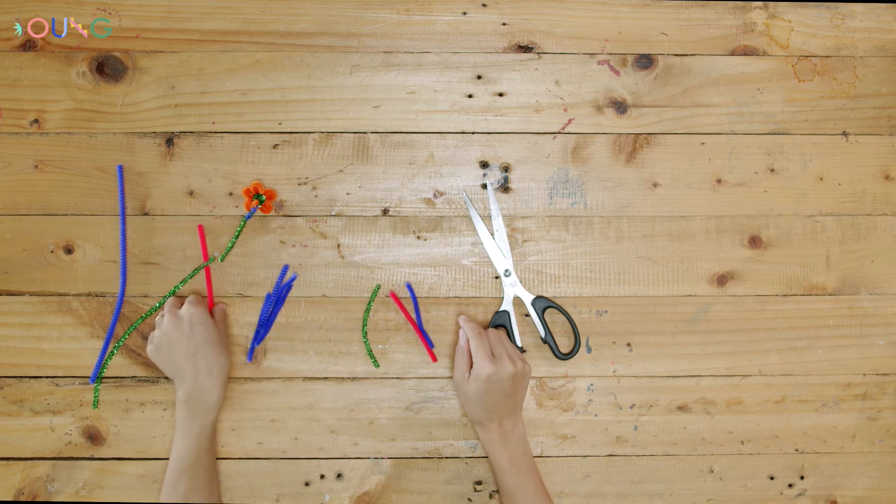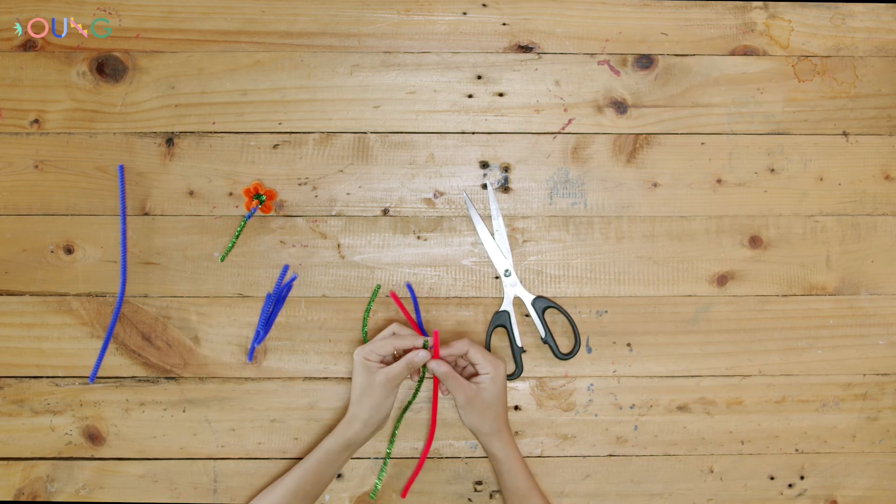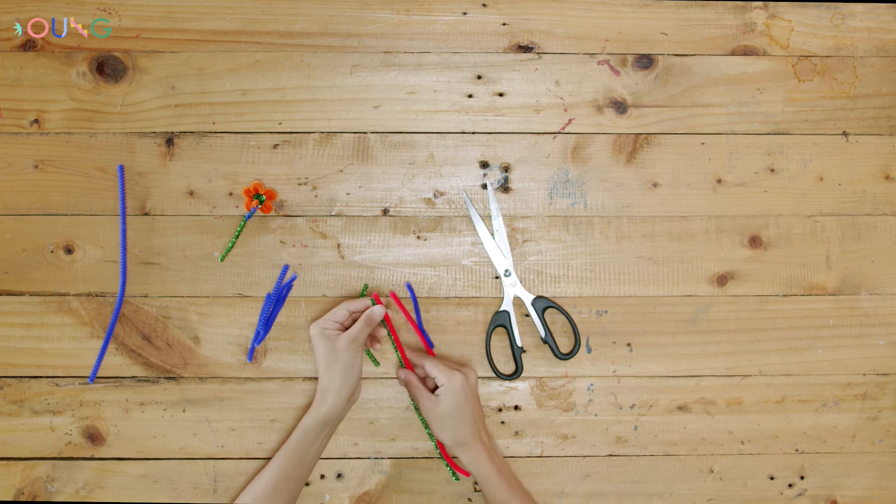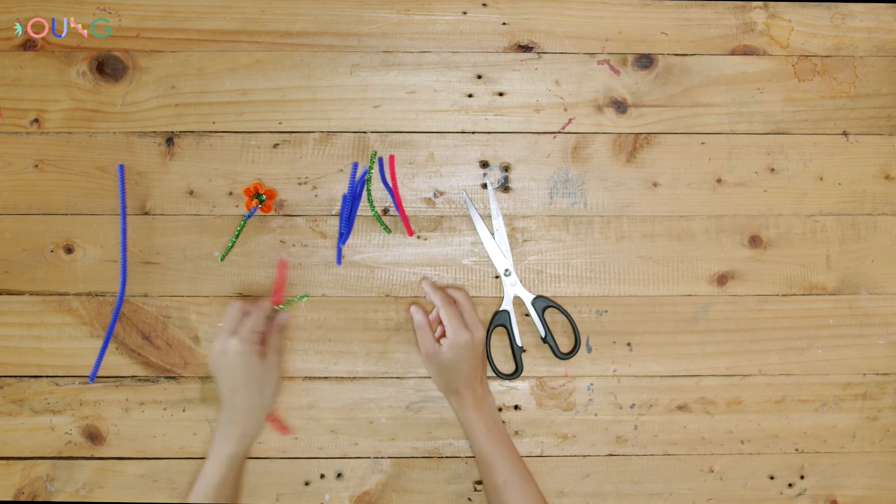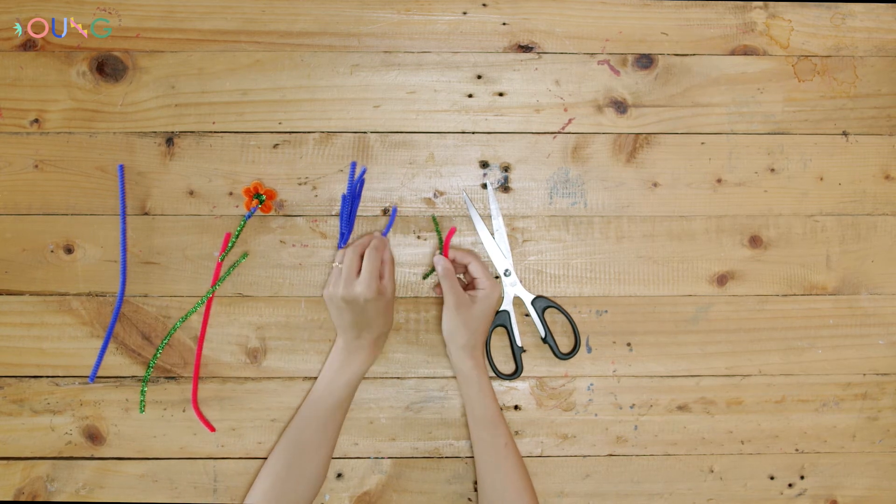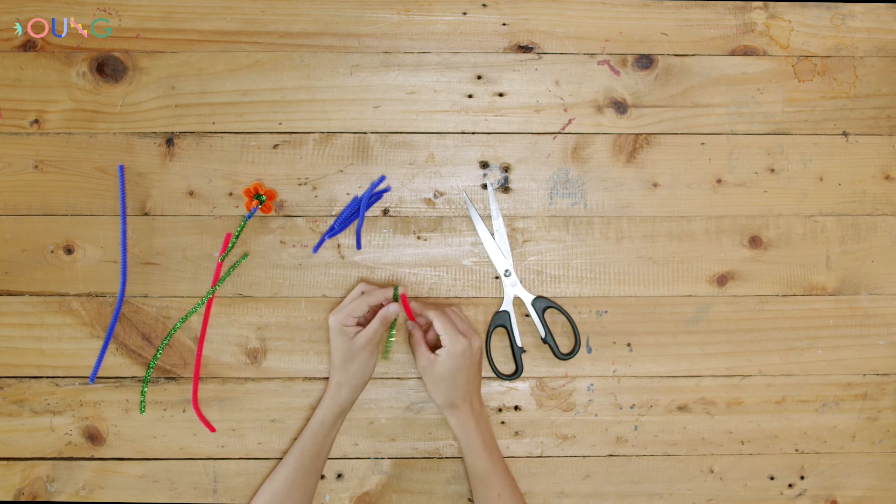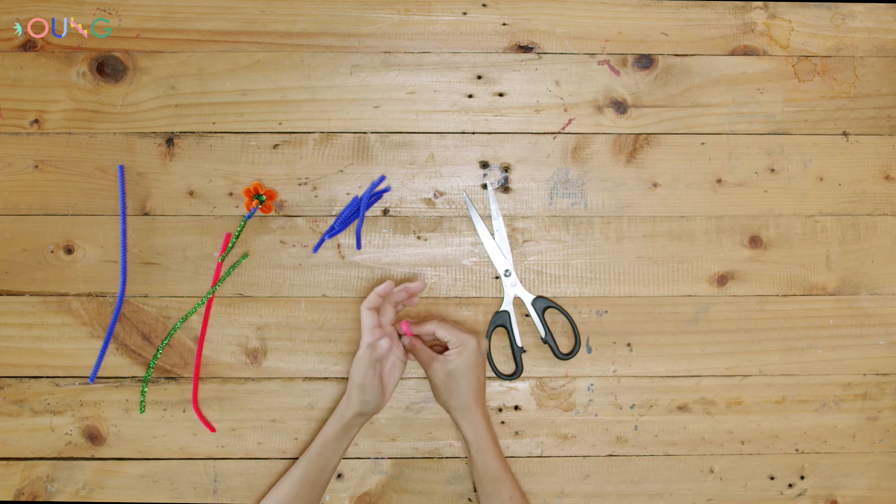Now you have five purple, one pink, and one green pieces. Take the green and pink, combine them on their end by twisting them together. Then take all five of the purple ones and combine them to the stock. Twist, twist, twist!